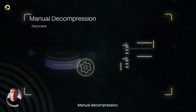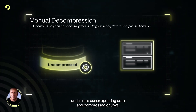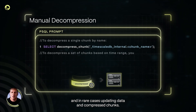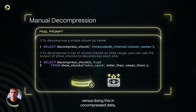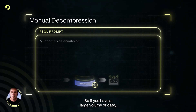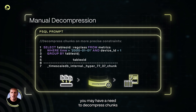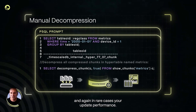Manual decompression. Decompressing can be necessary for inserting and, in rare cases, updating data in compressed chunks. The reason for that is because it's more computationally expensive versus doing this in uncompressed data. So if you have a large volume of data, you may have a need to decompress chunks to improve your backfilling and, in rare cases, your update performance.